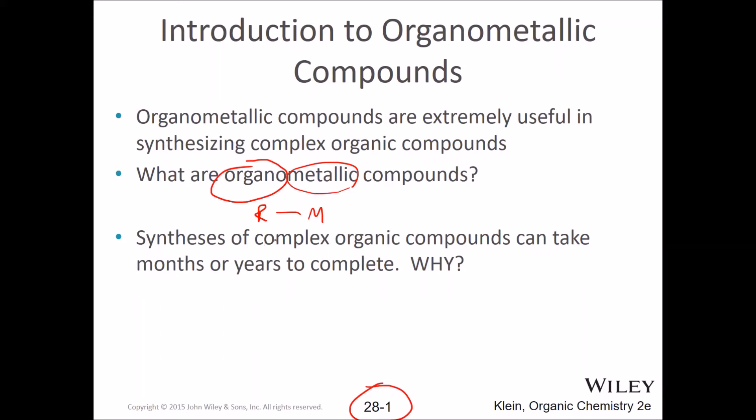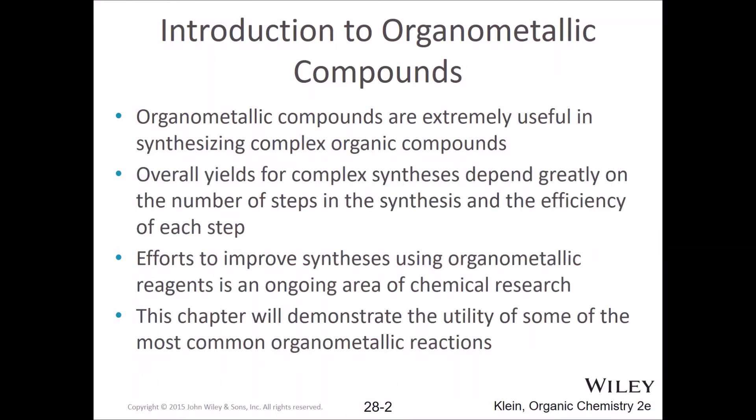Klein's got interesting sentences on that in the book, go have a look. Organometallic compounds are extremely useful. Overall yields for complex synthesis depend greatly on the number of steps and efficiency of each step. If we can reduce the number of steps and improve efficiency, then we can get lots more product.